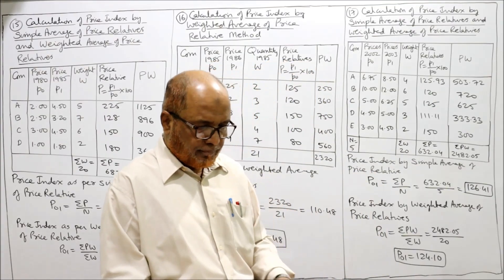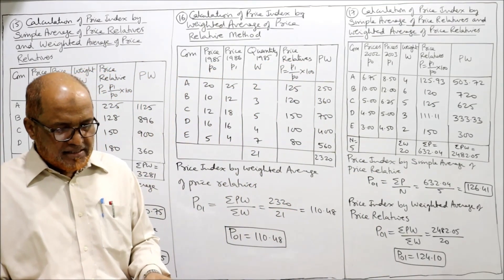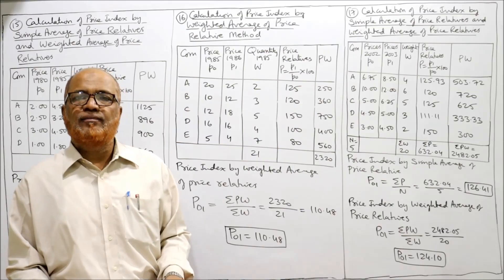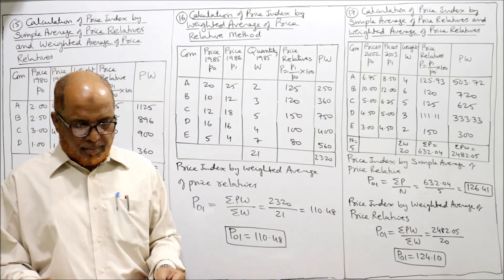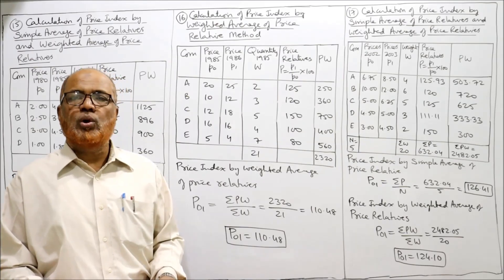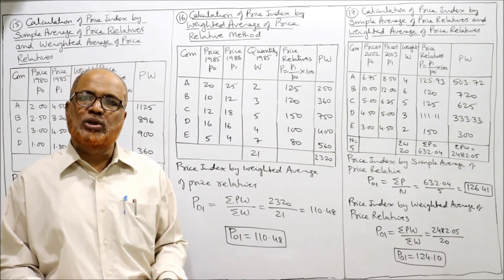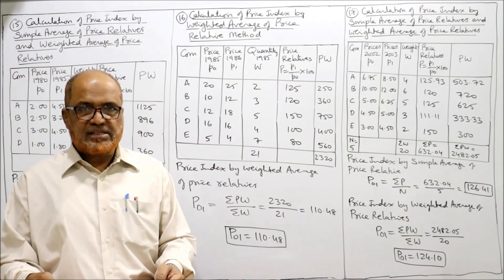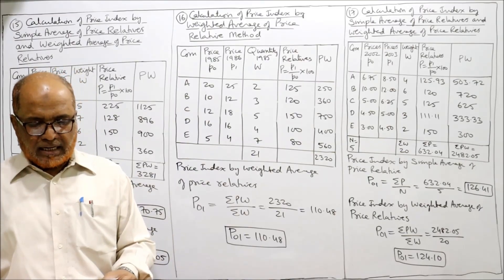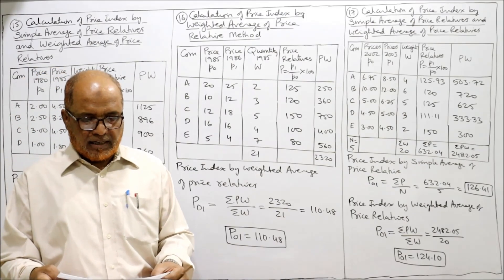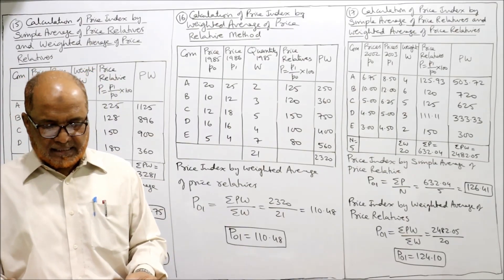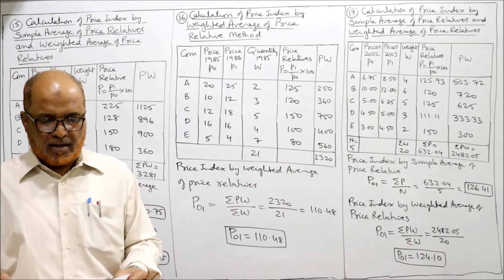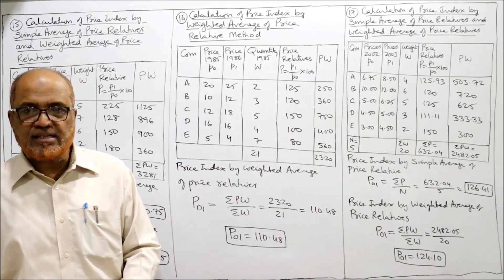Problem number 16: calculate price index from the following data by taking 1985 as base (1985 = 100), using weighted average of price relatives only — one method this time. Commodities are A, B, C, D, E — five commodities. Prices in 1985 and quantity in 1985 are given, then prices in 1986. So 1986 prices are the current year and 1985 prices are the base year. The quantity of 1985 will be taken as the weight.